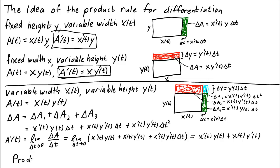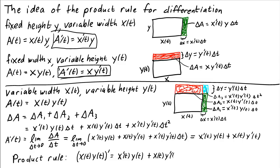We summarize our results with the product rule: the derivative of a product x of t times y of t, written as [x of t times y of t] prime, equals the derivative of x times y — that is, x prime of t times y of t — plus x times the derivative of y, which is x of t times y prime of t. We can also write the product rule in differential notation: d/dt of [x times y] equals dx/dt times y, plus x times dy/dt.